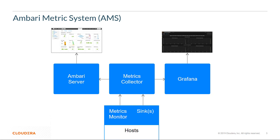Metrics Monitor on each host in the cluster collects system-level metrics and publishes to the Metrics Collector. Hadoop Sinks are plugins for Hadoop components to publish Hadoop metrics into the Metrics Collector. The Metrics Collector is a daemon that runs on a specific host in the cluster and receives data from the registered publishers, the monitors and the sinks.